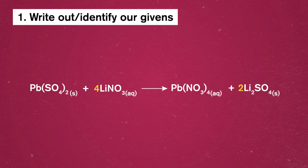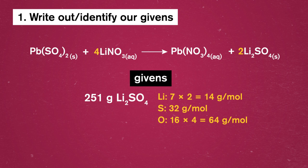Our first step is, as usual, to list out our givens. We know we have to end up with 251 grams of lithium sulfate. We also know the molar mass of lithium sulfate from the periodic table at 110 grams per mole.